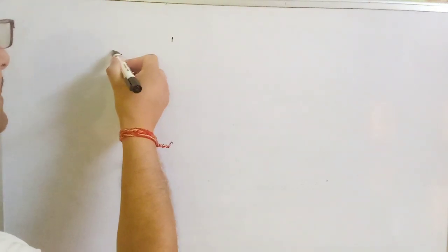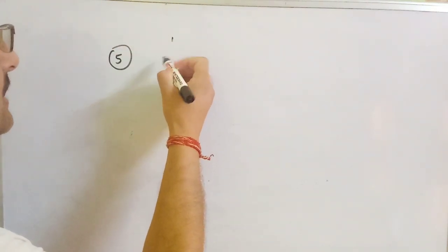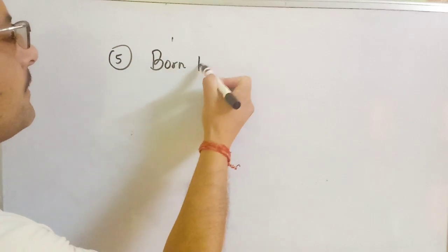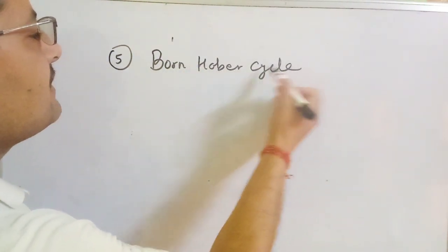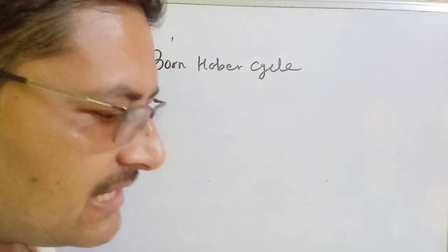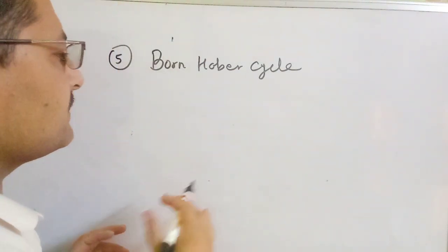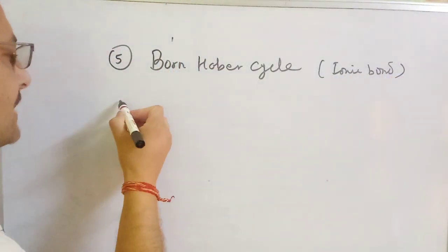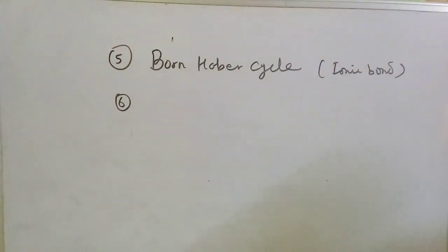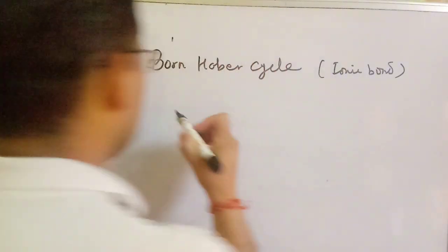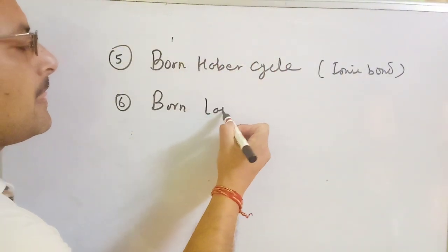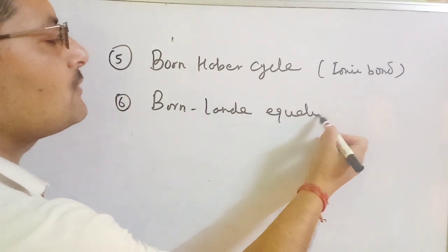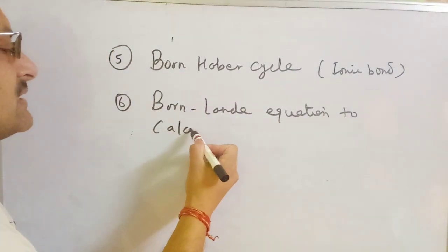Number 5 is Born-Haber cycle. Number 6 is also the Born-Haber cycle — the Born-Haber cycle is an important question and it is used as an equation to calculate lattice energy.